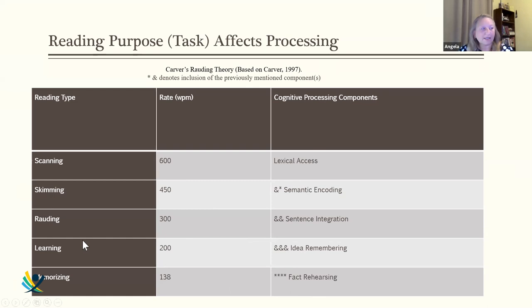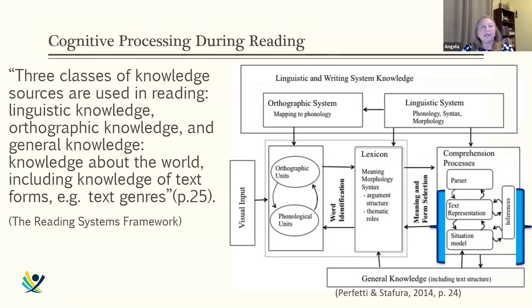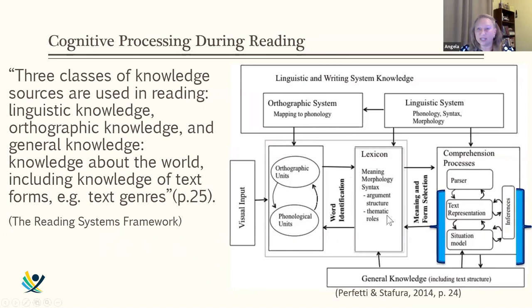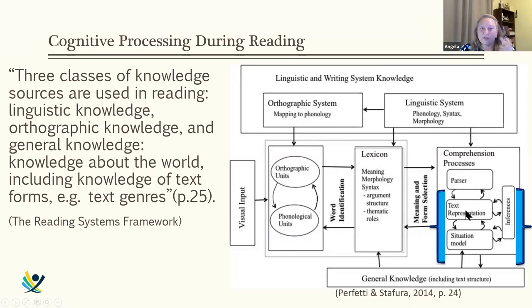After 40 to 50 years of researching reading, Perfetti and Stafura produced a comprehensive review of the literature and data, developing the Reading Systems Framework. Reading is exceptionally complex — all systems have to work together for understanding. The relevant focus here is the comprehension process, which assumes you have the linguistic system, orthographics, phonology, and lexicon in place. There are two main levels of understanding: text representation and the situation model.